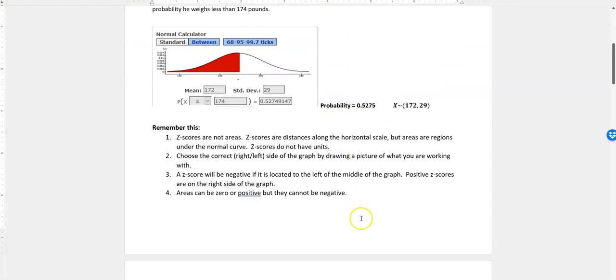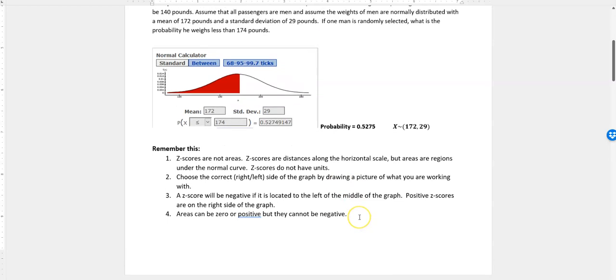I want to say a few things about z-scores. Z-scores are not areas. Z-scores are distances along that horizontal scale, but areas are regions under the curve. So the red thing is the area, but the values down below are the z-scores. Z-scores do not have units, but they do have a negative and positive to the left or negative and to the right or positive.